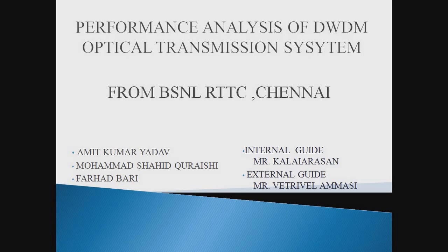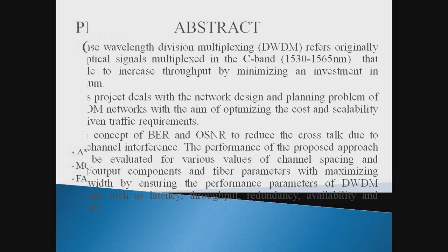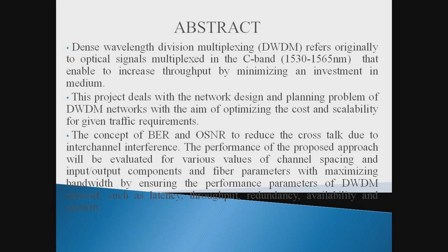I am doing the project in the performance analysis. We are using the technique of DWDM, which originally refers to the optical signal multiplex in the C-band, which covers the frequency wavelength range of 1530 to 1565 nanometers. This enables increasing the throughput while minimizing investment in the medium. We are using the concept of analysis of the bit error rate and optical signal to noise ratio to reduce the crosstalk between the two channels.